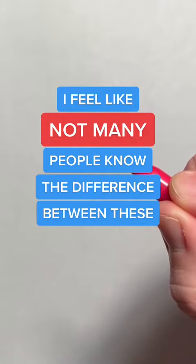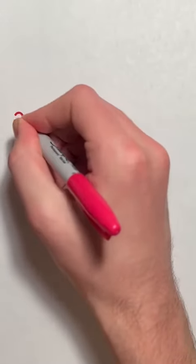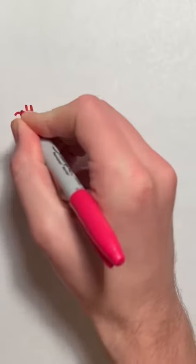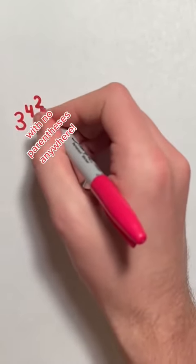I feel like not many people would know the difference between these two situations. Let's say you have 3 to the power of 4, and then the 4 has an exponent of 2 with no parentheses anywhere.